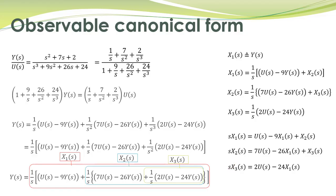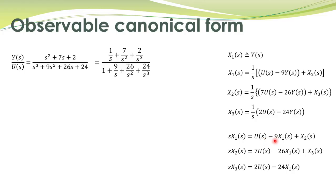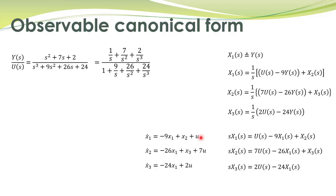We write these equations in the time domain. Taking the inverse Laplace transform, the left-hand side becomes ẋ1, and the right-hand side becomes minus 9x1 plus x2 plus u. The argument t is omitted — all variables u, x1, x2, x3 are functions of time. Likewise, taking the inverse Laplace transform of the other equations gives the remaining differential equations. So we have three first-order differential equations — state equations — that describe this system.